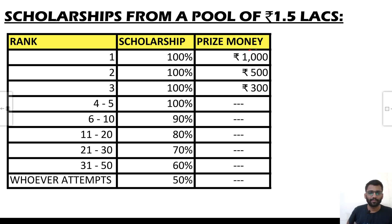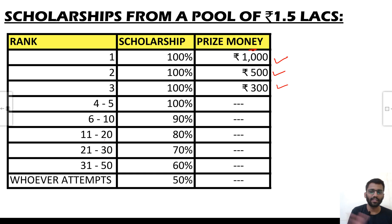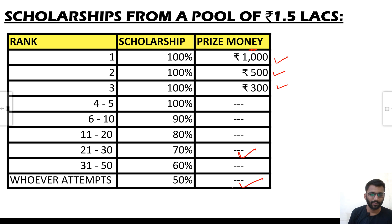Now, what are the scholarships? First ranker will get 100% scholarship, second and third rankers will also get 100%, and 4th and 5th rankers will also get 100% along with prize money of ₹1000, ₹500, and ₹300 respectively. Ranks 6 to 10 will get 90% scholarship, ranks 11 to 20 will get 80%, ranks 21 to 30 will get 70%, ranks 31 to 50 will get 60%, and whoever attempts the paper — regardless of rank — will get a 50% scholarship.